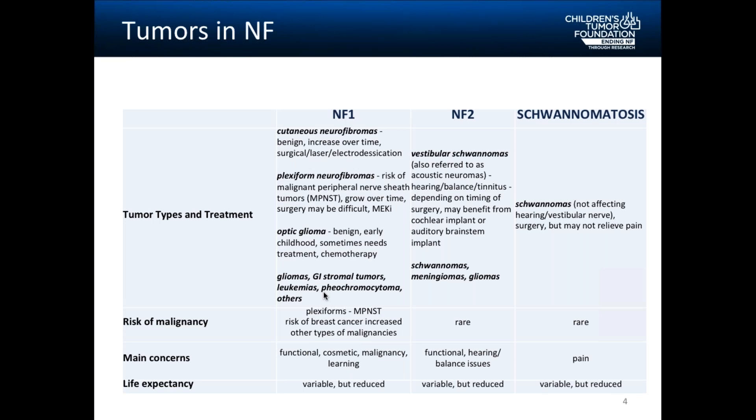We also see optic gliomas in NF1. These are benign tumors that grow on the nerve behind the eye. They're seen in early childhood in children seven or younger, and they occasionally need treatment, even chemotherapy, but this differs a lot from one child to the next. In some cases, no treatment is needed and they can even shrink and go away on their own. Other types of tumors seen less often but related to NF1 include gliomas of other kinds, gastrointestinal stromal tumors, leukemias, pheochromocytoma, and a few others.